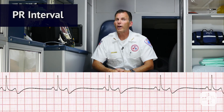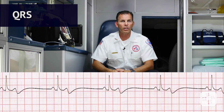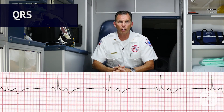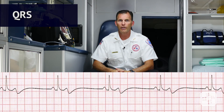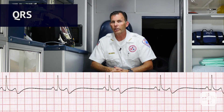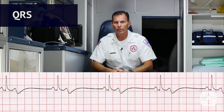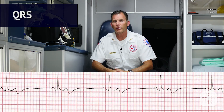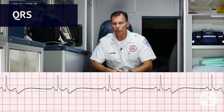Now we move on to the QRS complex of the ECG. Is the QRS interval less than 0.09 seconds? Yes, the QRS interval is less than 0.09 seconds. Is it wide or narrow? In this case, the QRS is narrow. Are the QRS complexes similar in appearance? Yes, we can see that each one looks similar.